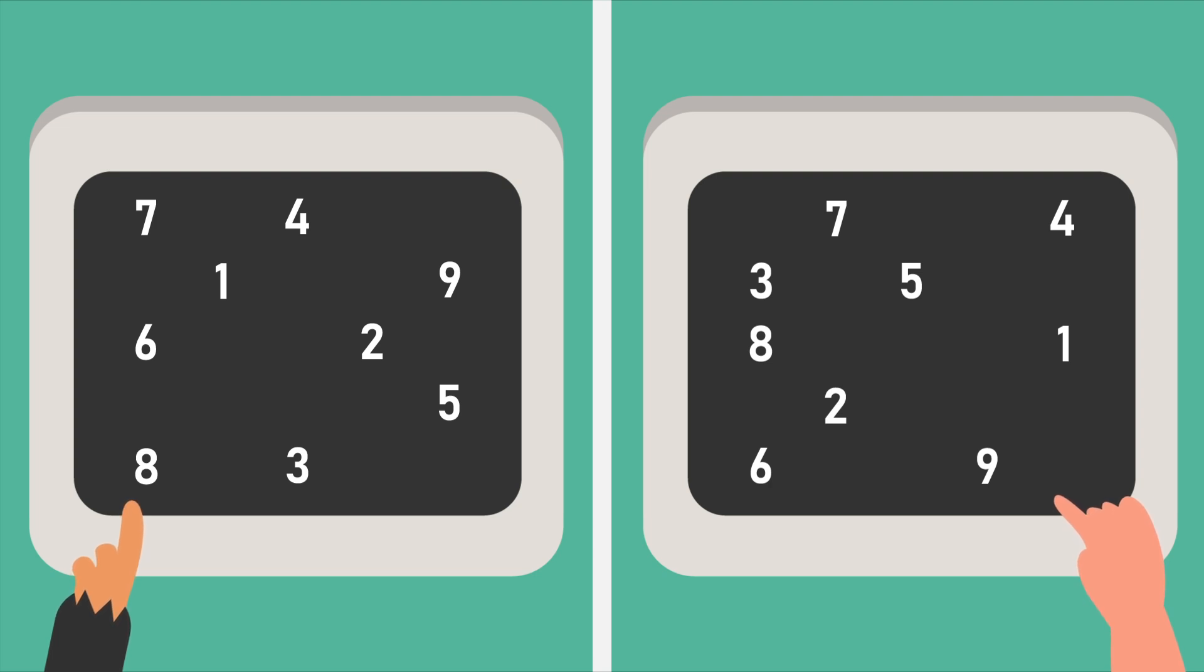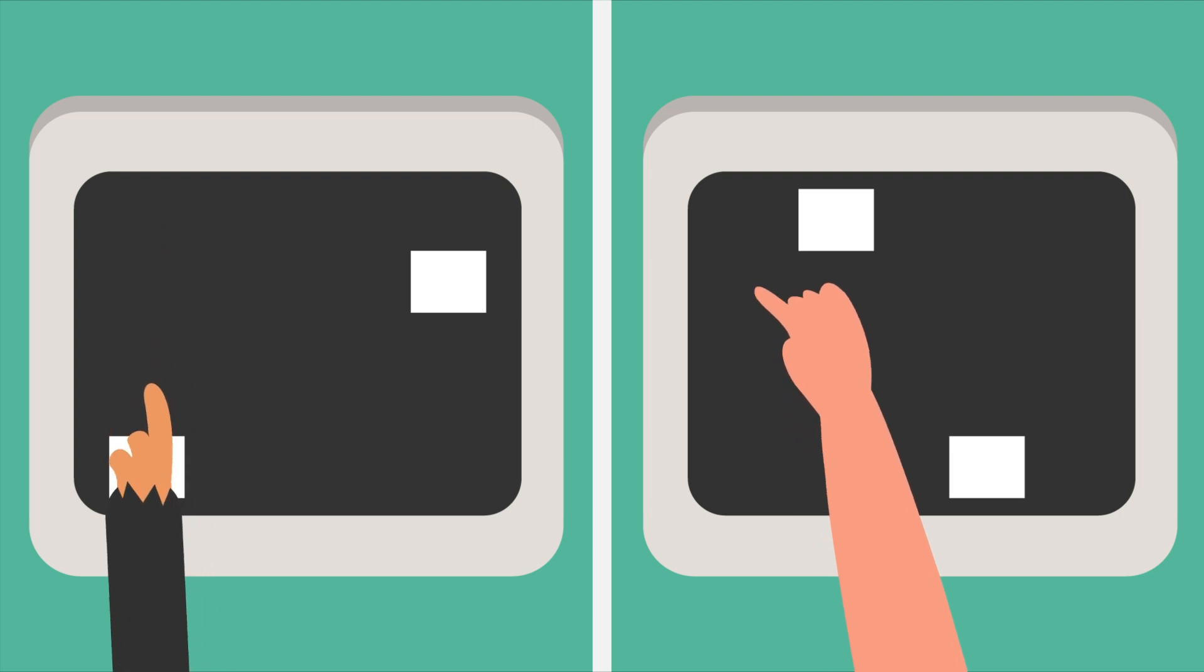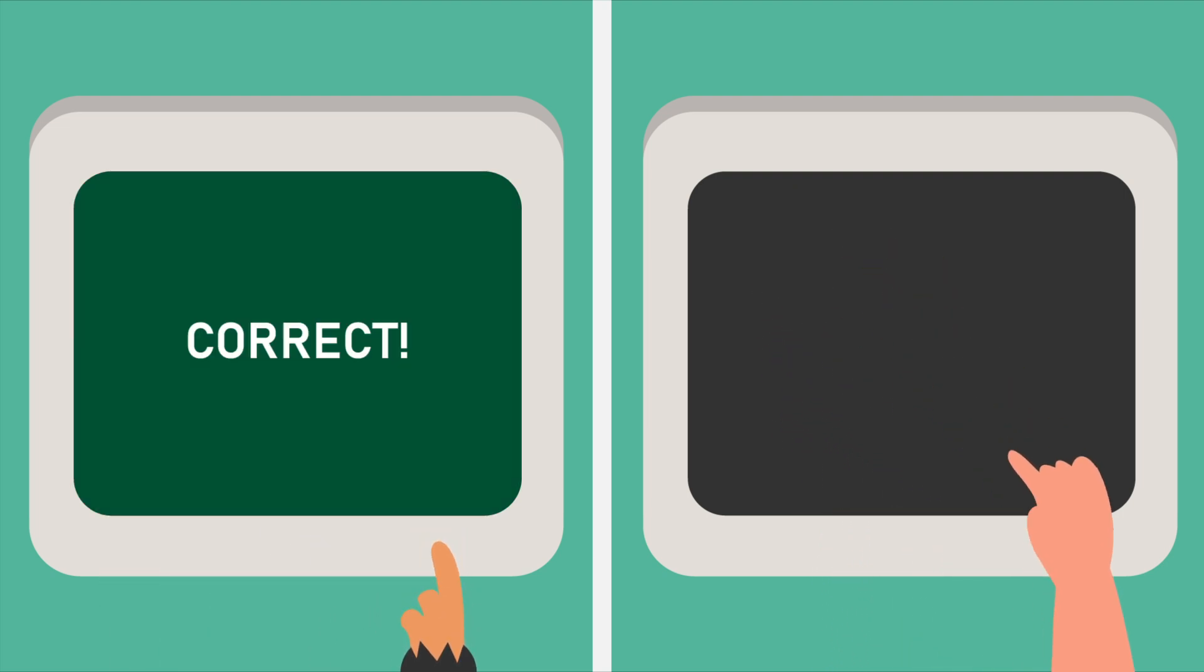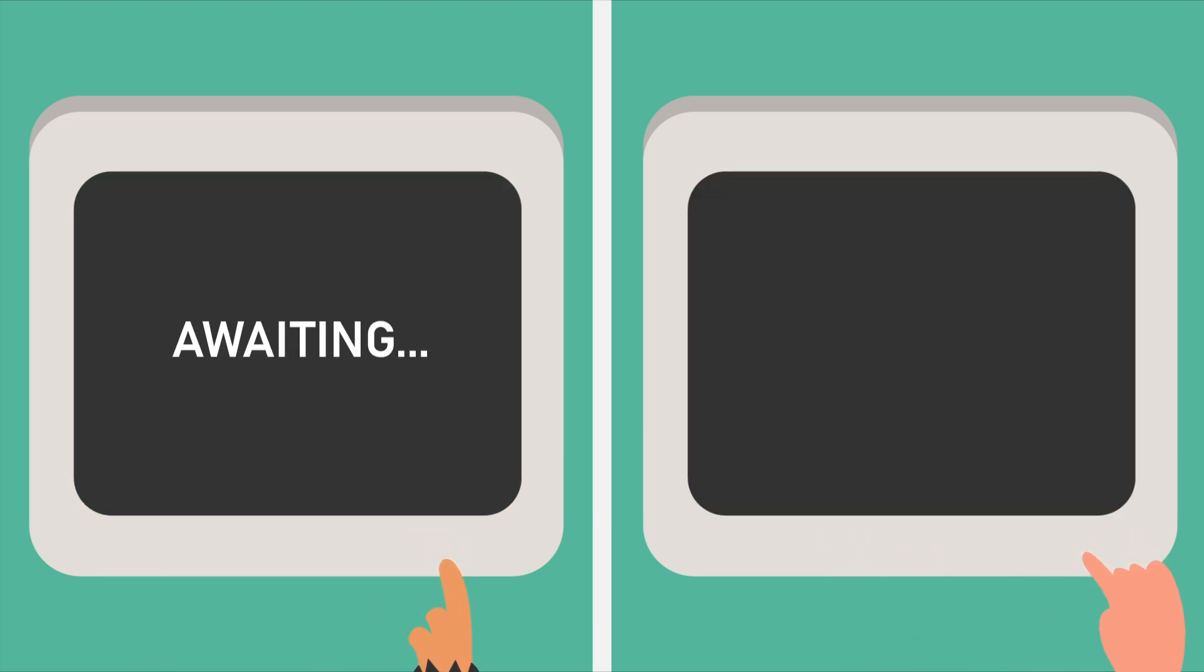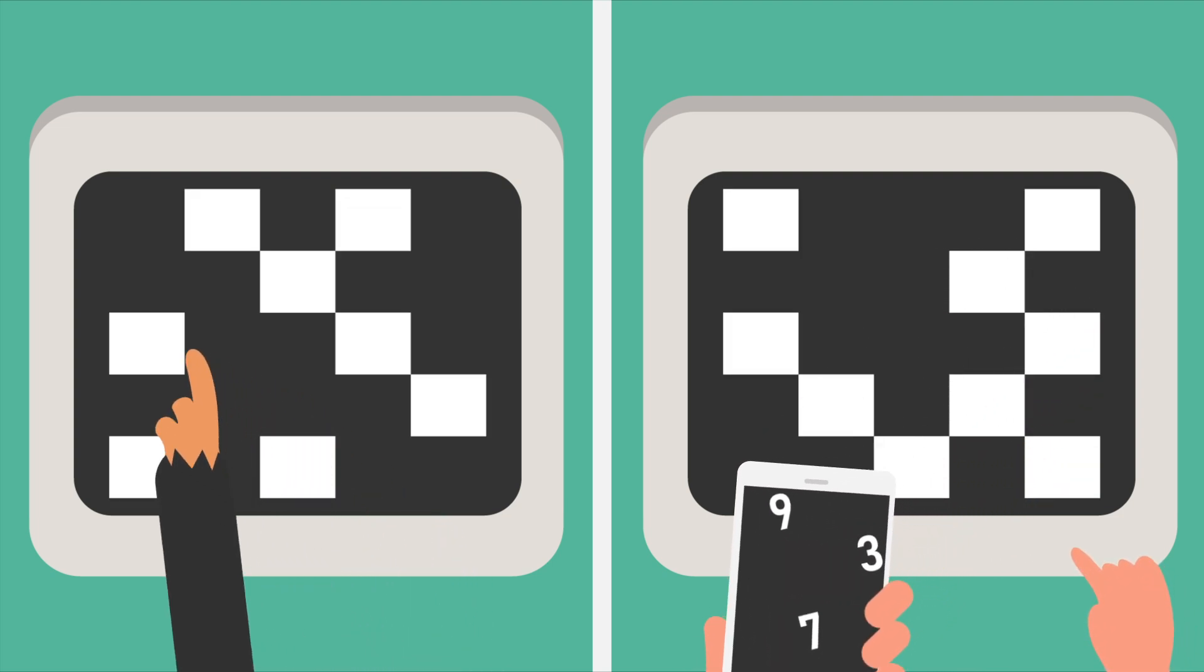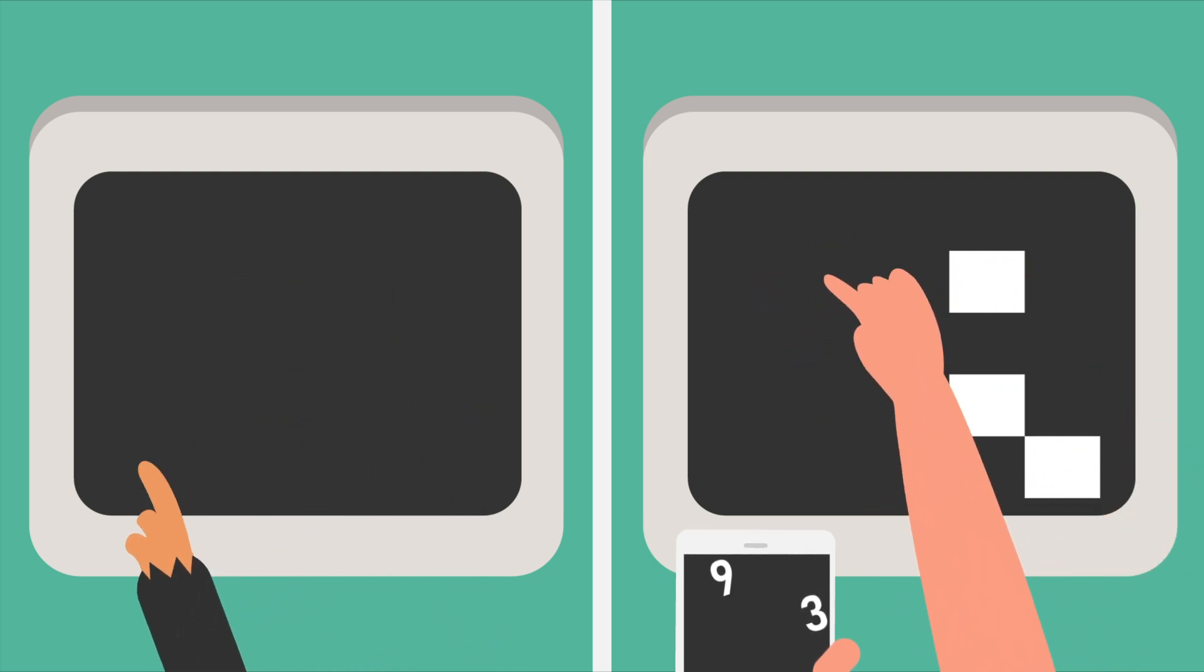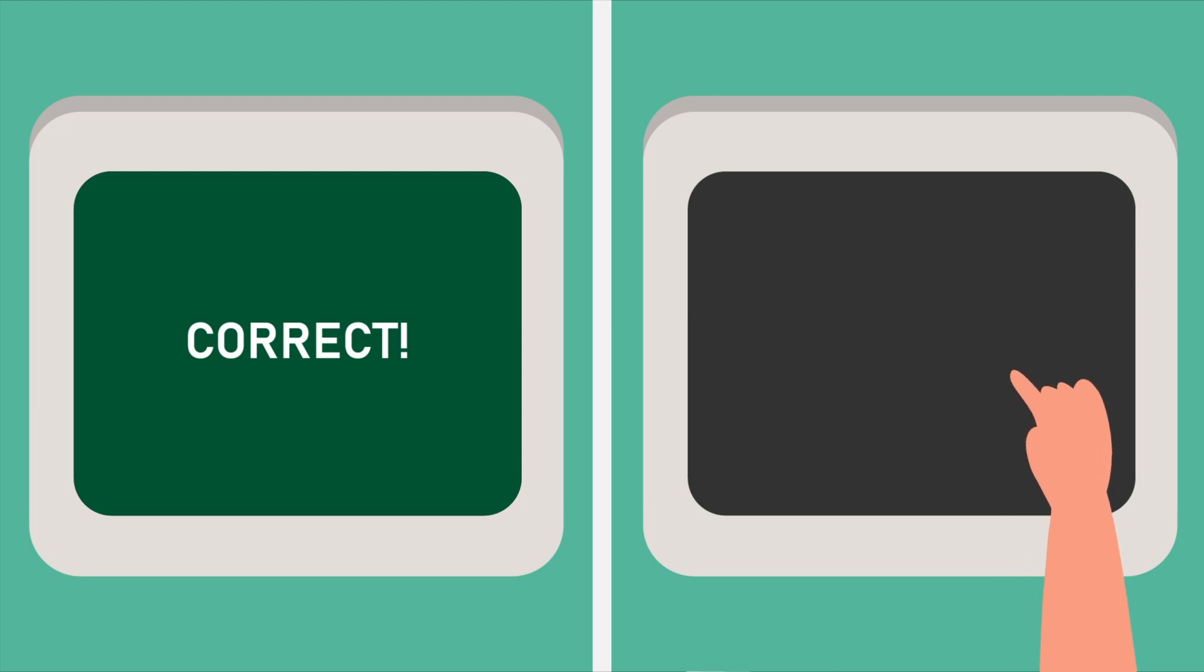Similarly, chimpanzees can easily beat humans at a game of recalling a set of numbers when shown on a screen for a fraction of a second, indicating that they also have a better short-term memory than us. But since there is no uniform test for determining intelligence, we cannot simply say that one creature is superior to another.